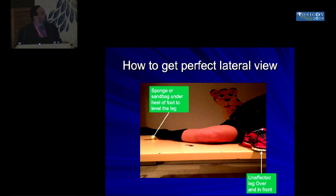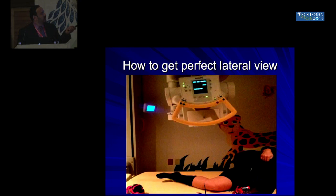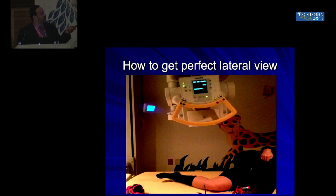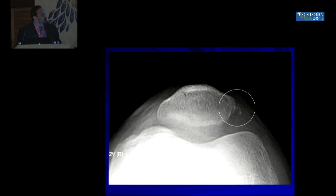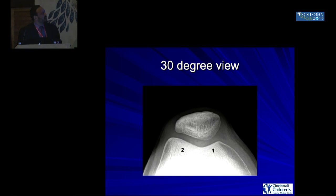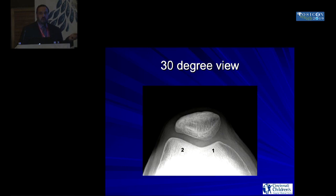To get a perfect lateral x-ray every time, place a sponge underneath the leg to level it in line with the knee joint, then use about a 10-degree tilt of the gantry. For the axial view, a proper merchant view is taken at 30 degrees with the knee flexed 45 degrees. A good axial view has a lateral-to-medial facet ratio of about 1 to 2, evaluating the proximal trochlea. Trochlear dysplasia is mainly present in the proximal part, so low flexion is important.